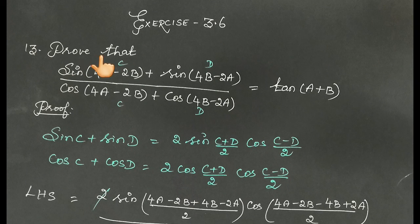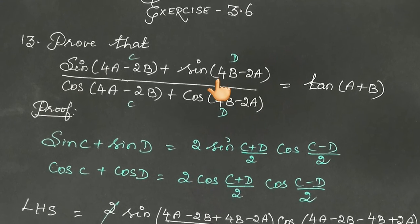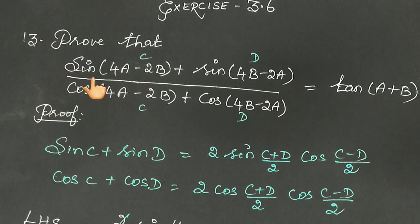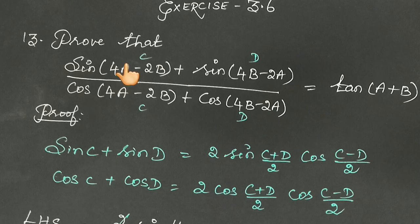Exercise 3.6, 13th sum. Prove that sin of 4a minus 2b plus sin of 4b minus 2a, the whole thing divided by cos of 4a minus 2b plus cos of 4b minus 2a, is equal to tan of a plus b.